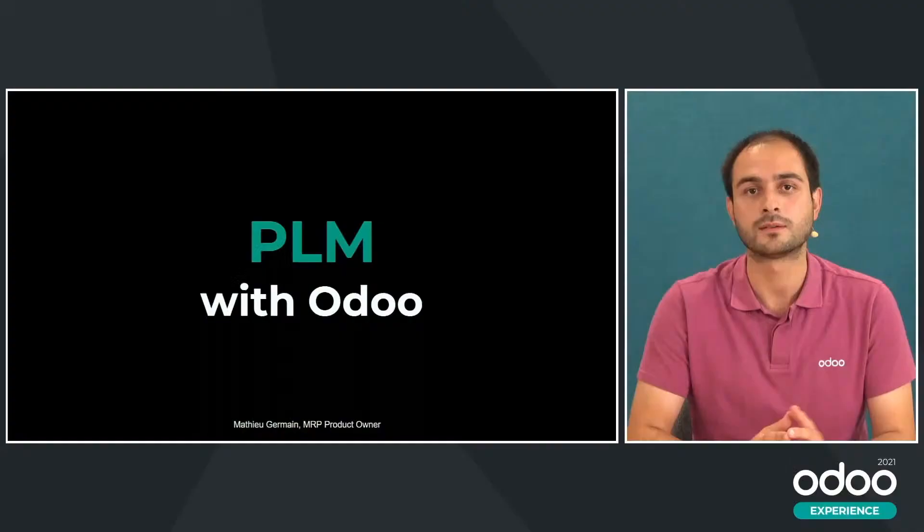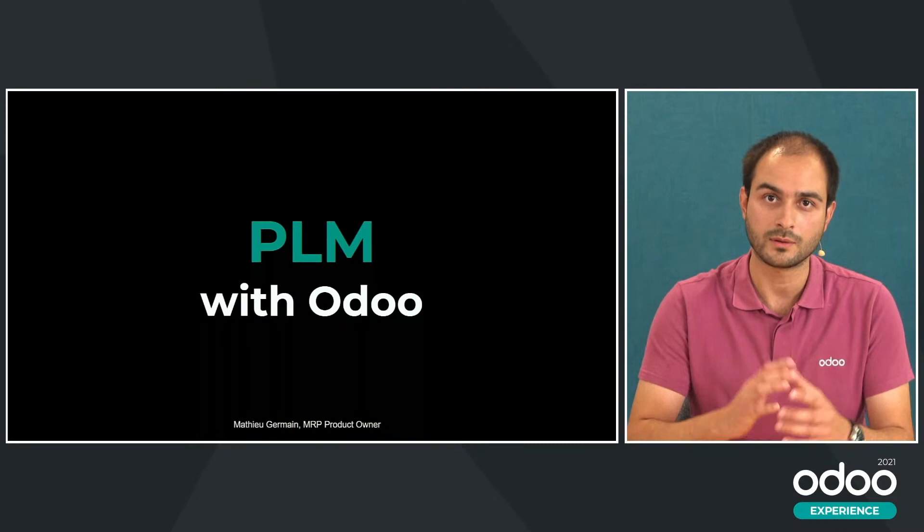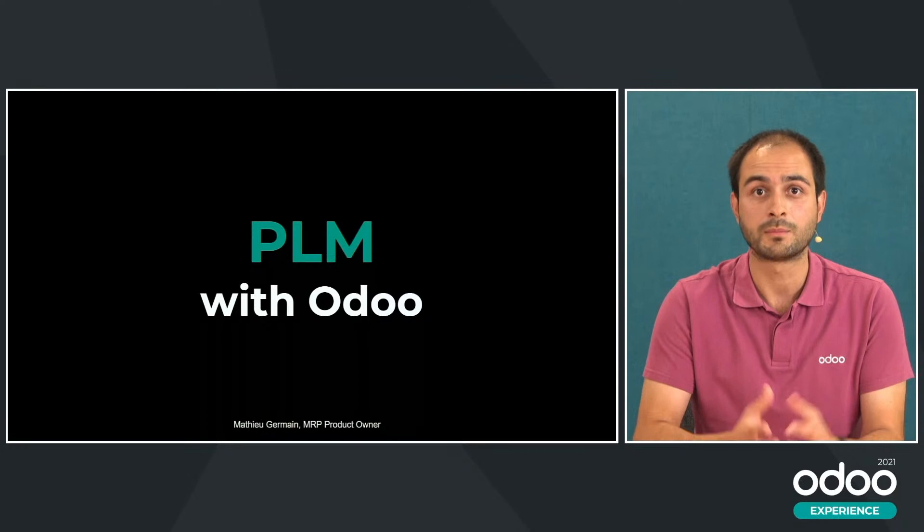Experience 2021. My name is Mathieu Germain. I am the MRP Product Owner at Odoo, which means that I'm responsible for the manufacturing, the maintenance, the repair, the quality, and the PLM app. Today I will focus on PLM and specifically what's new in V15.